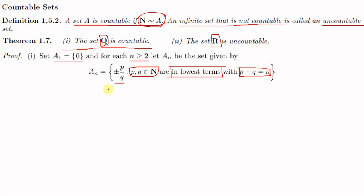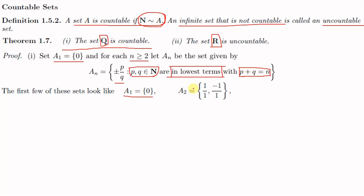Listing the initial sets: A₁ = {0}. A₂ is the set of all ±p/q where p + q = 2, so p and q can only be 1, giving A₂ = {1/1, −1/1}. For A₃, p + q = 3 gives 1+2 and 2+1, so A₃ = {1/2, −1/2, 2/1, −2/1}. These are the only elements in A₃.